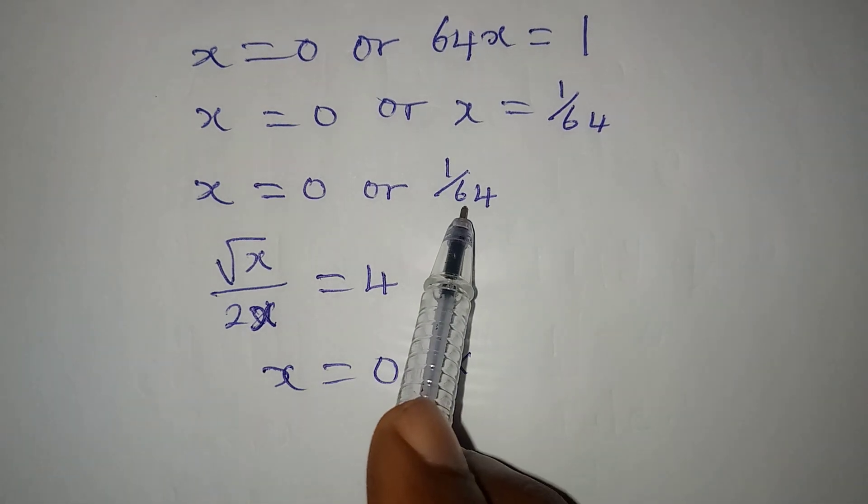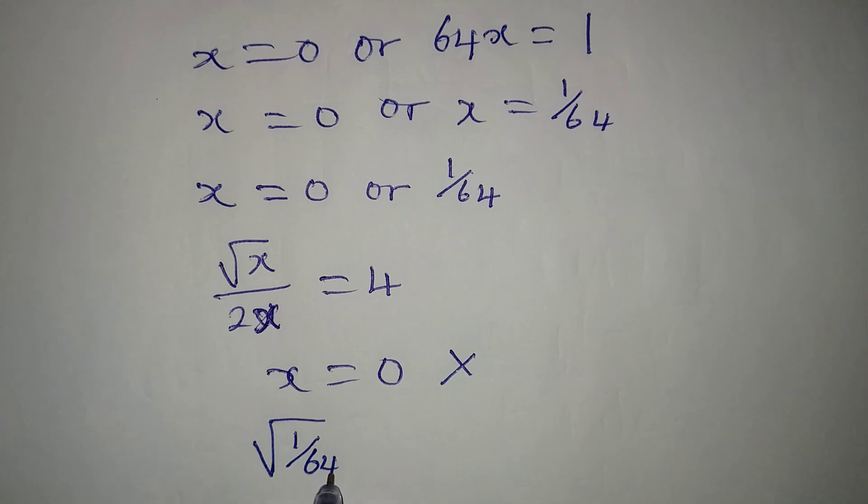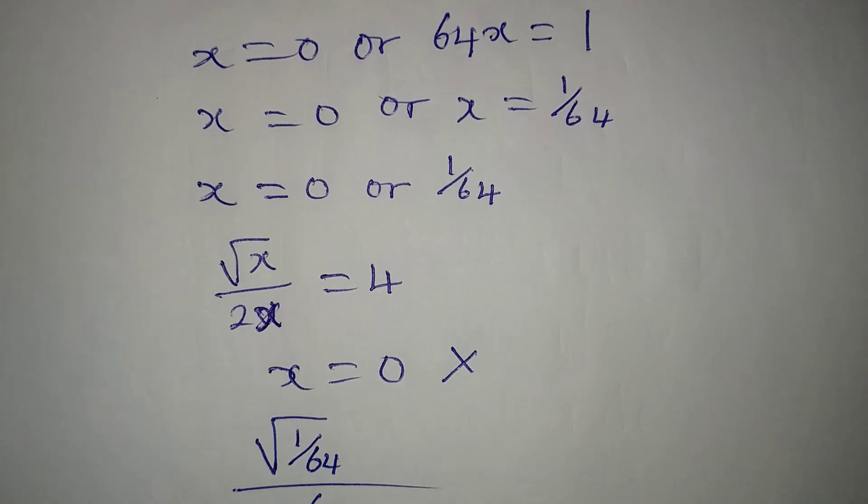Let's try the second value of x. So we have square root of 1 over 64, over 2 multiplied by 1 over 64.